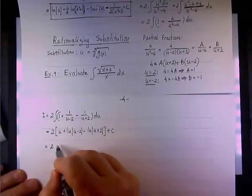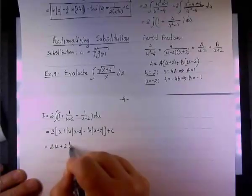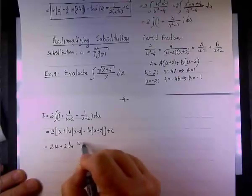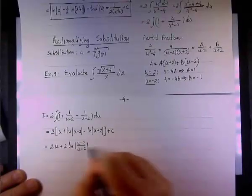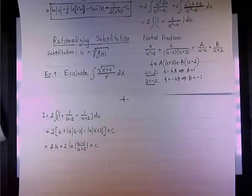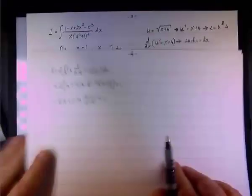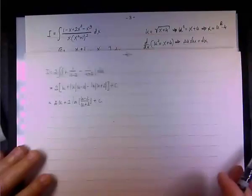And now we need to, one thing here, because I don't have to deal with coefficients, I can make it a little more compact. And I write this 2u plus 2 times the natural log of u minus 2 divided by u plus 2.